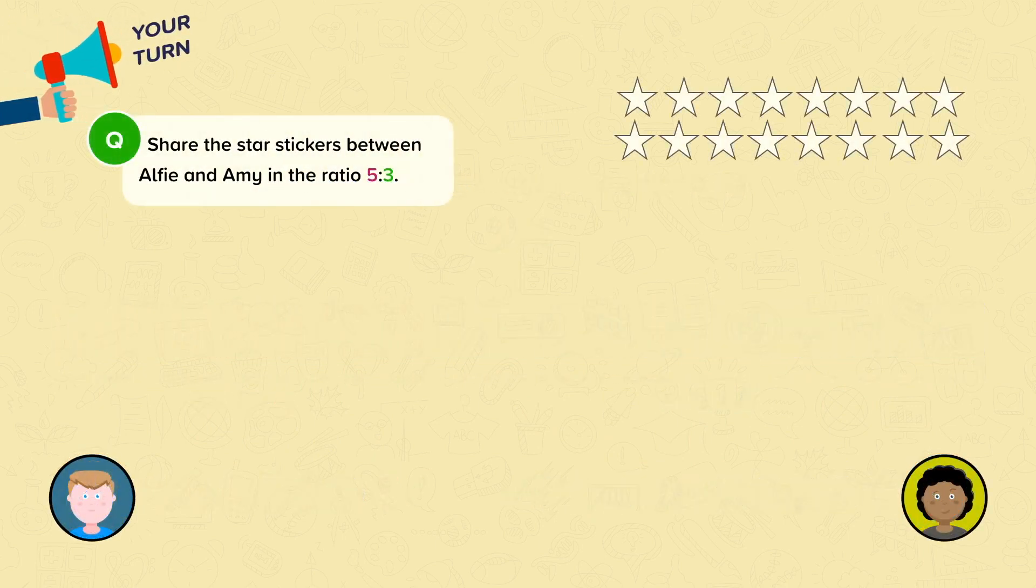Now it's your turn. Share the star stickers between Alfie and Amy in the ratio 5 to 3. Pause the video if you need time to think.